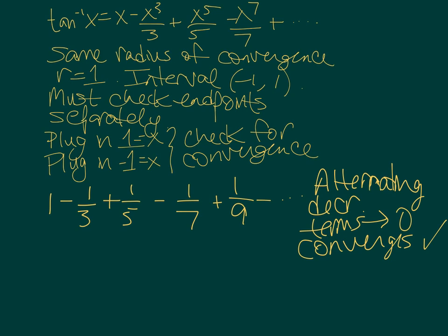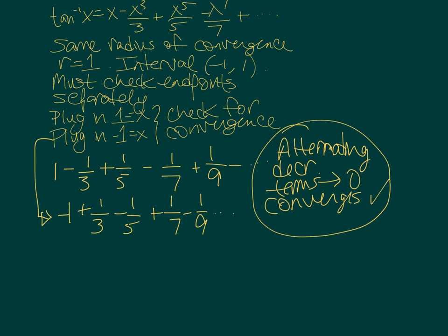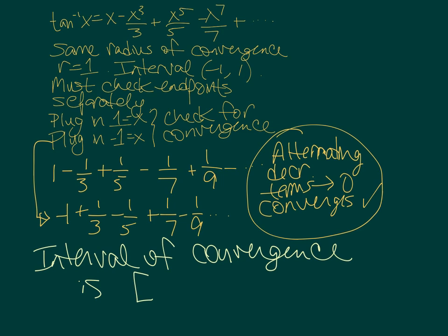And what about plugging in a -1? When we plug in a -1, we get -1, and the next term becomes plus 1/3 - 1/5 + 1/7 - 1/9. Again, alternating series with decreasing terms that are converging to 0, and that also converges. So our final conclusion is that the interval of convergence for this power series for arctan of x is the closed interval, including the endpoints, -1 to 1.